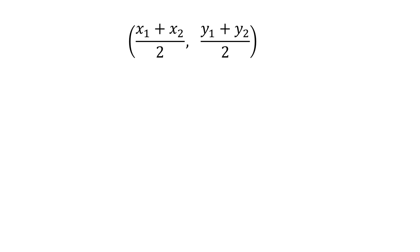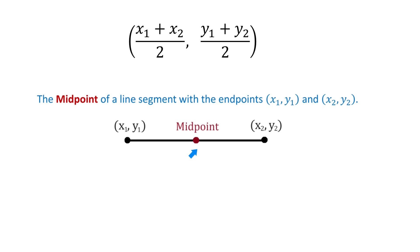Next, we have x1 plus x2 over 2 and y1 plus y2 over 2. This is the midpoint of a line segment with the endpoints x1, y1 and x2, y2.